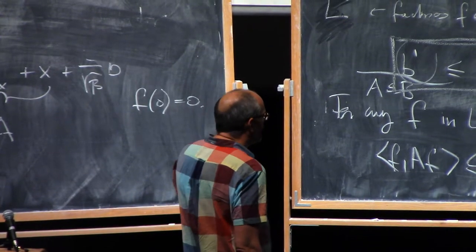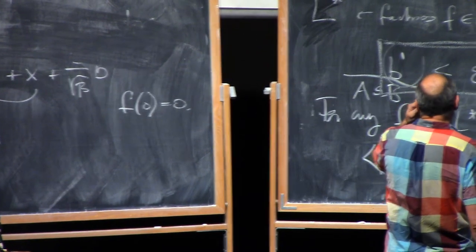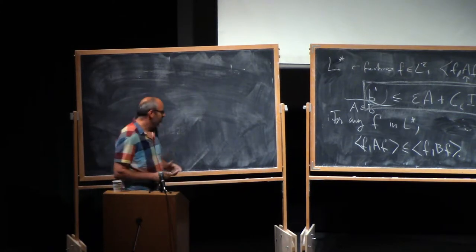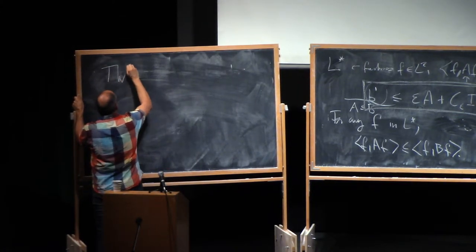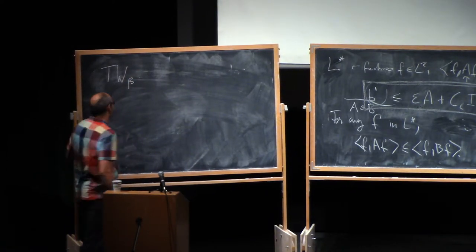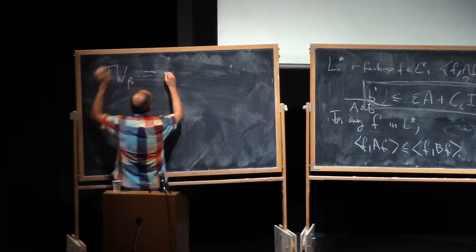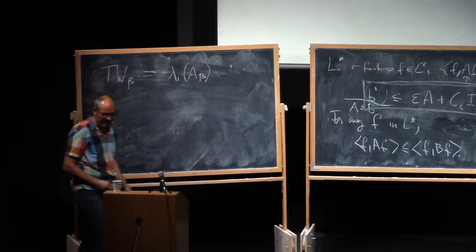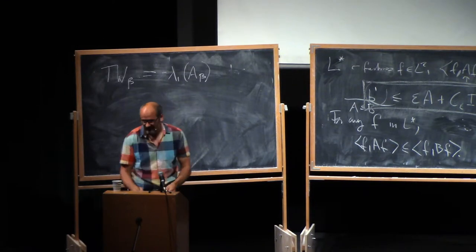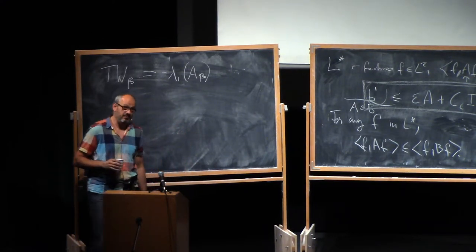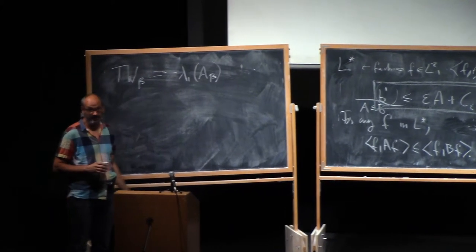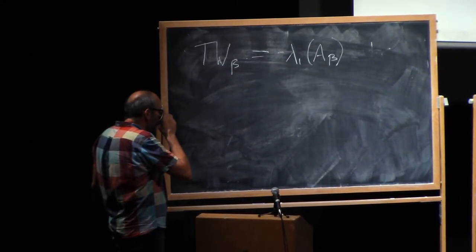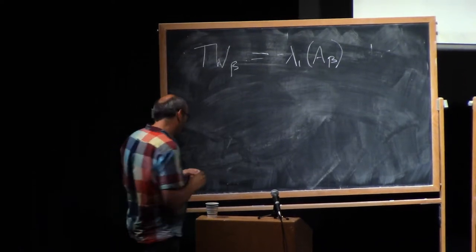Now here is a definition. The Tracy-Widom beta distribution is defined as minus lambda_1 of the Airy beta operator. For betas that are not classical, this is the definition. For classical betas — beta = 1, 2, 4 — this is a theorem that you can represent the Tracy-Widom distribution this way.